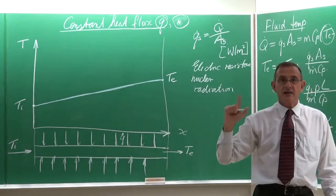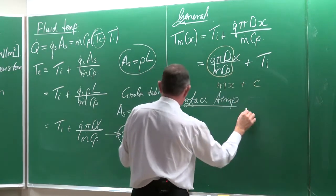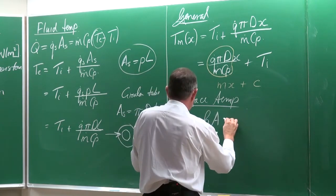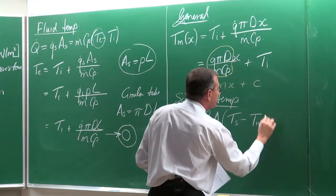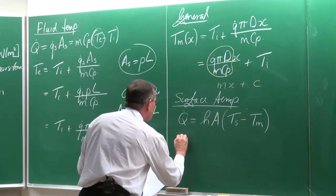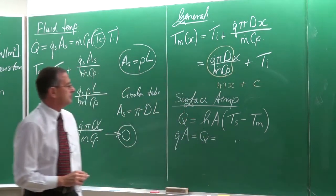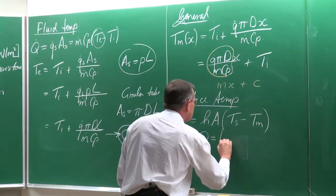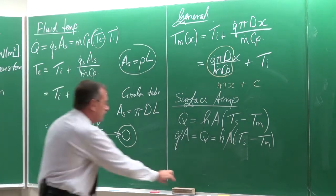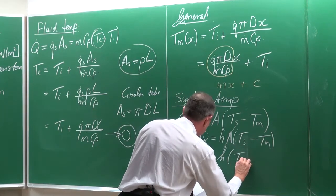So let's look at the surface temperature — if we can determine it. We determine the surface temperature by saying the heat transfer rate equals the heat transfer coefficient multiplied by the area multiplied by Ts minus Tm. Or the heat flux multiplied by the surface area equals the heat transfer coefficient times area times Ts minus Tm. We can get rid of the areas and write that the heat flux is equal to the heat transfer coefficient multiplied by Ts minus Tm.